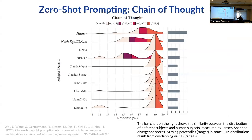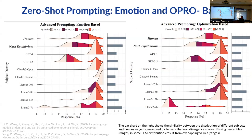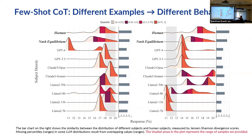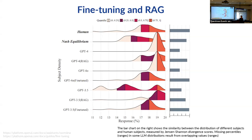We tried a bunch of different ways to prompt and fine-tune LLMs to exhibit human behavior. We tested zero-shot prompting, chain of thought, emotional-based prompting, role-playing, OPRO — all known techniques engineered to make a difference — and none of them made a difference. These are all out-of-distribution, meaning we don't show examples. When we did show examples in-context, LLMs changed their behavior to match — so they're trying to mimic.